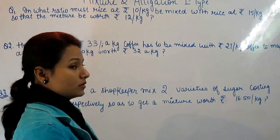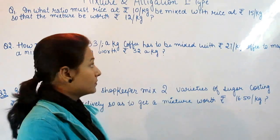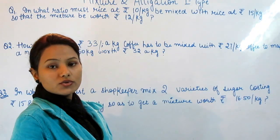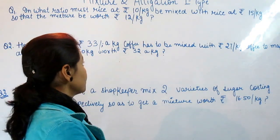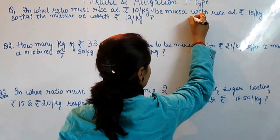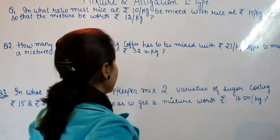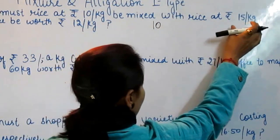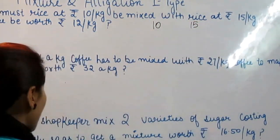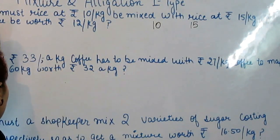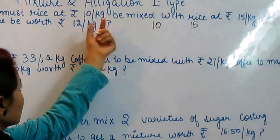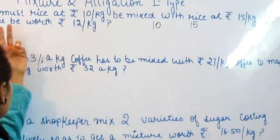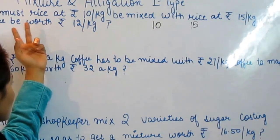Whenever we have the price of two varieties and we are given the mean value, we always use alligation. We have rice at Rs. 10 and Rs. 15. We want to know in what ratio these must be mixed so that the mixture is worth Rs. 12 per kg.